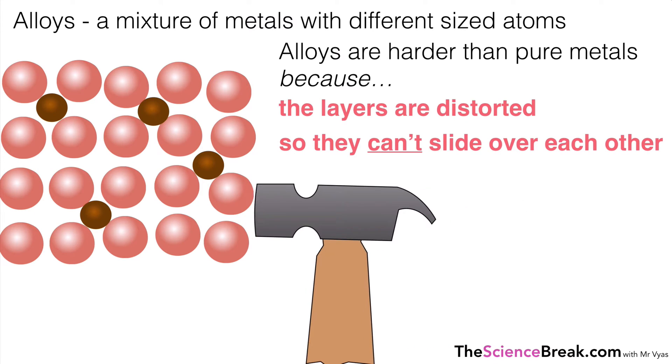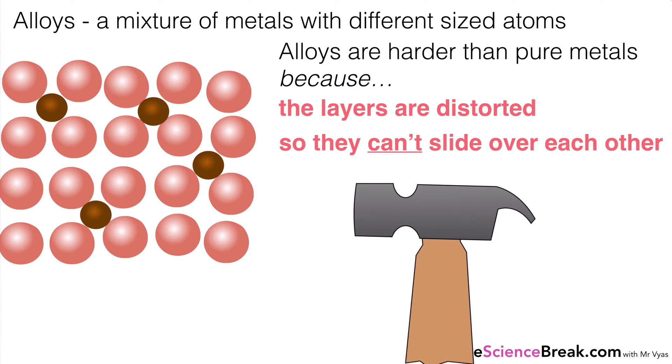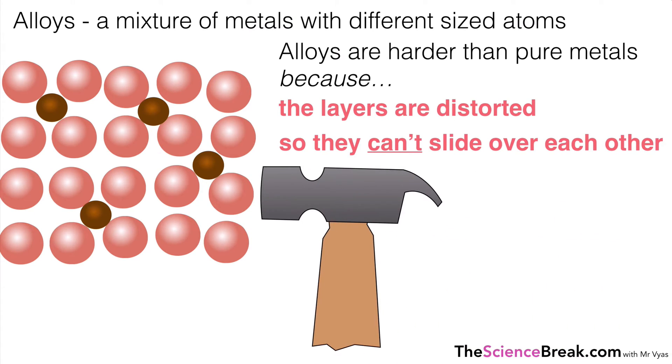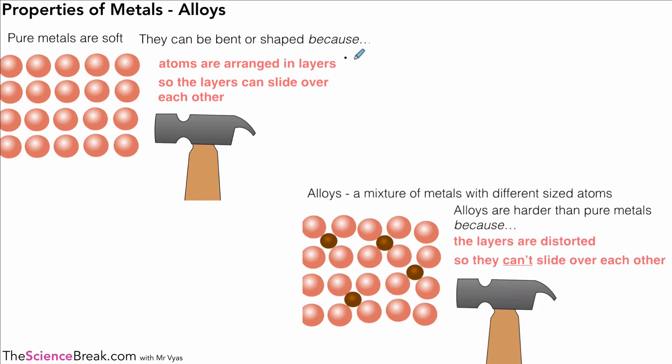So if we were to bang with our hammer an alloy here, give it a hard bang, even that metal is a lot less likely to be able to be bent or hammered into shape because the alloy is much harder.